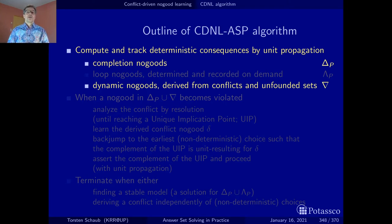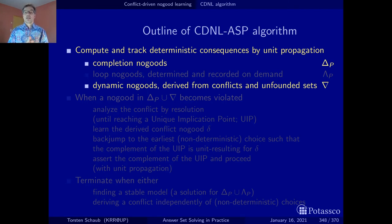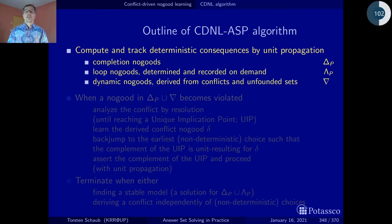Forgetting or deletion of no-goods is an art by itself, but I'll skip that here. I just wanted to point out that these dynamic no-goods actually grow and shrink depending on what is currently learned or derived, but also sometimes things have to be forgotten. The sources of this are the conflicts and the unfounded sets. This is more or less the basis — unit propagation on these types of no-goods. And now let's see what happens when a conflict actually occurs.